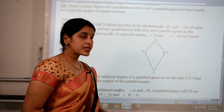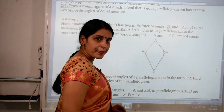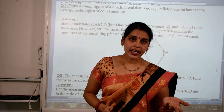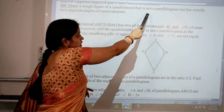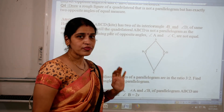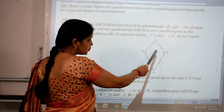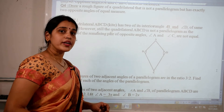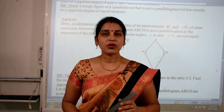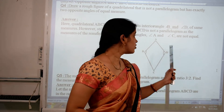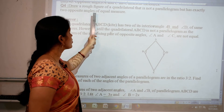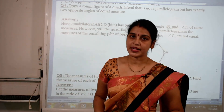Question 3: draw a rough figure of a quadrilateral that is not a parallelogram but has exactly two opposite angles of equal measure. Such a quadrilateral is a kite. Here the figure ABCD is a kite where angle B and angle D are of equal measure, but angle A and angle C are not equal — so it is not a parallelogram, which requires both pairs of opposite angles to be equal.